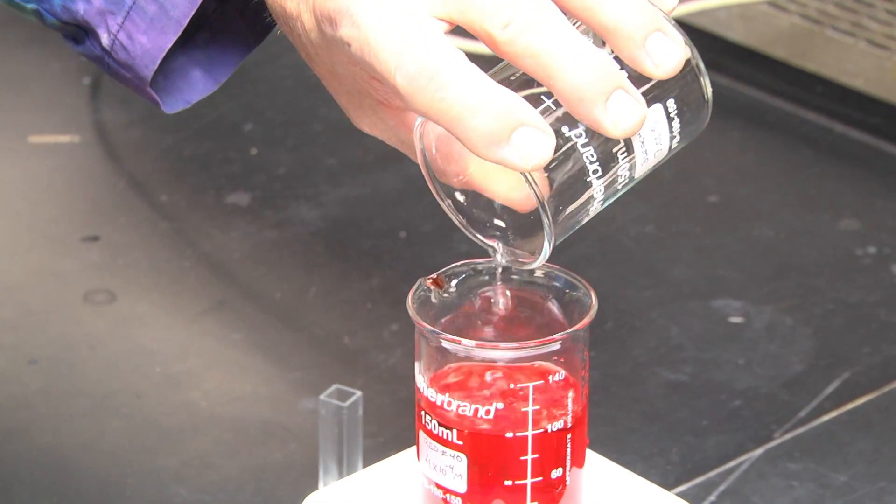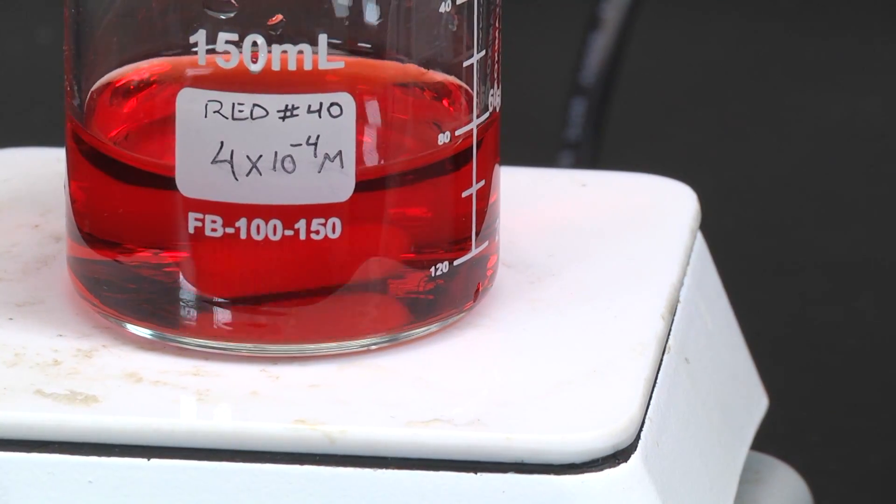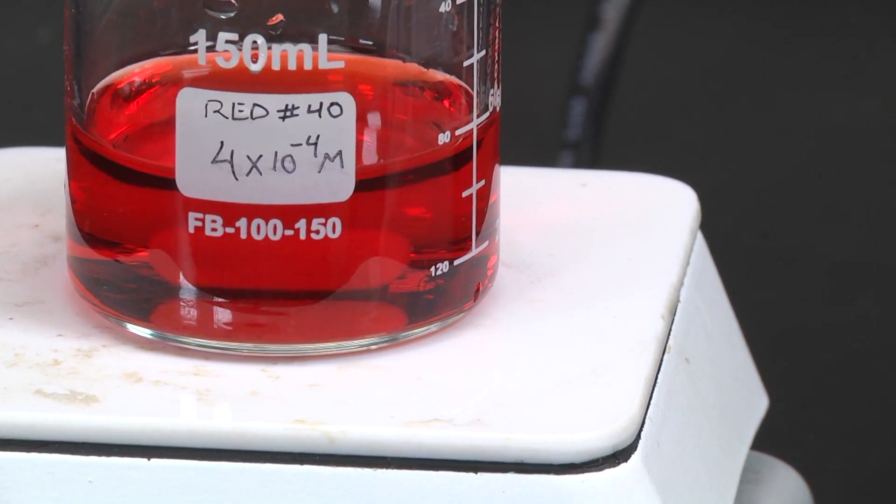First, mix known amounts of the dye and the bleach in a beaker on a stir plate. You of course know why stirring is necessary.